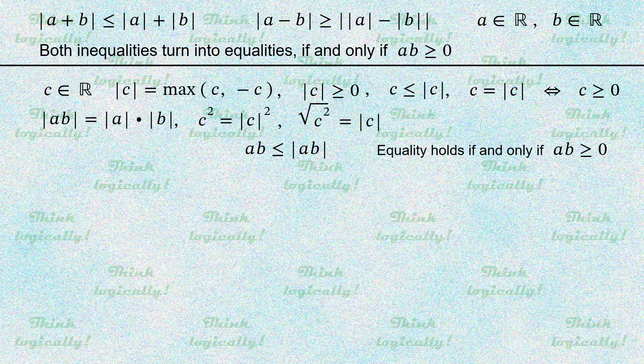Next, we multiply both sides of the inequality by 2, also replacing the modulus of a times b by the modulus of a times the modulus of b. Now we add a squared plus b squared to both sides of the inequality.